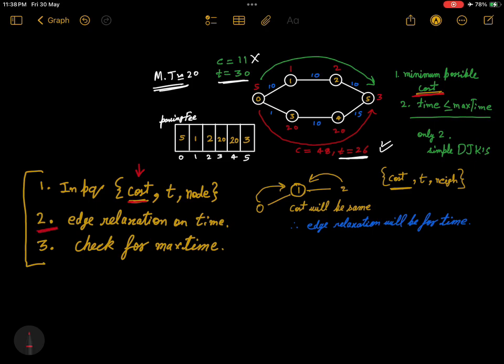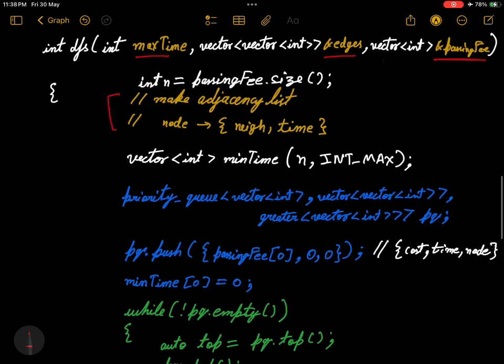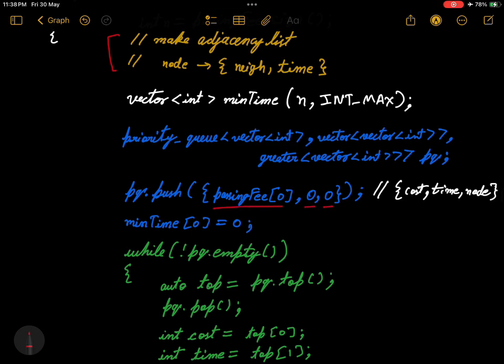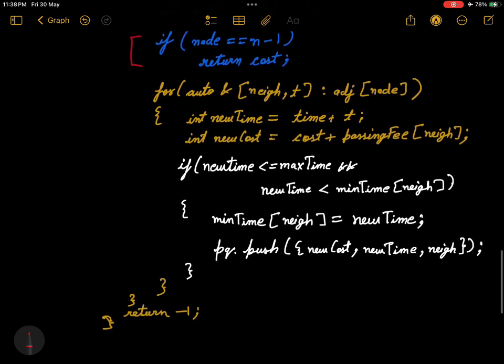In our priority queue, we will pass a vector and the first element of the vector will be the cost. We will relax the edges based on the time. We saw the code for it, very similar to Dijkstra, just a little bit of modification in priority queue. Cost will be the first element in the vector and the edge relaxation will be done based on time.